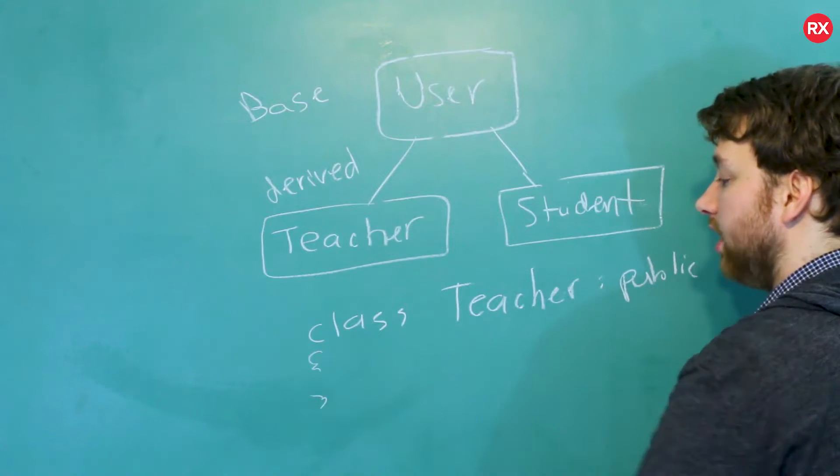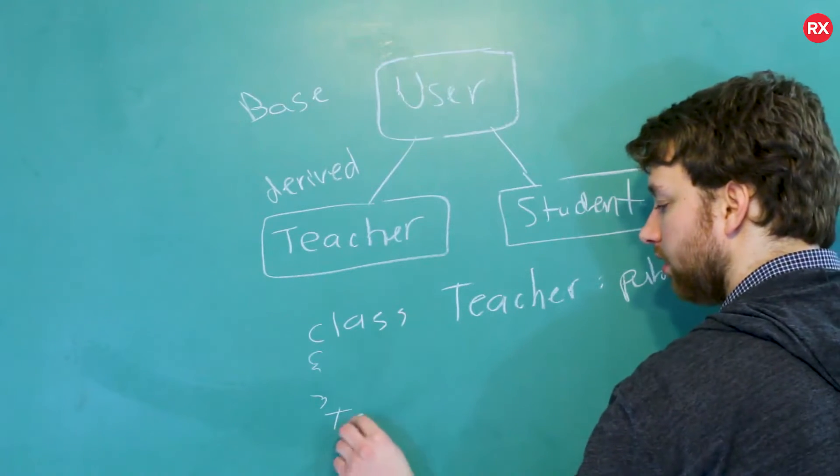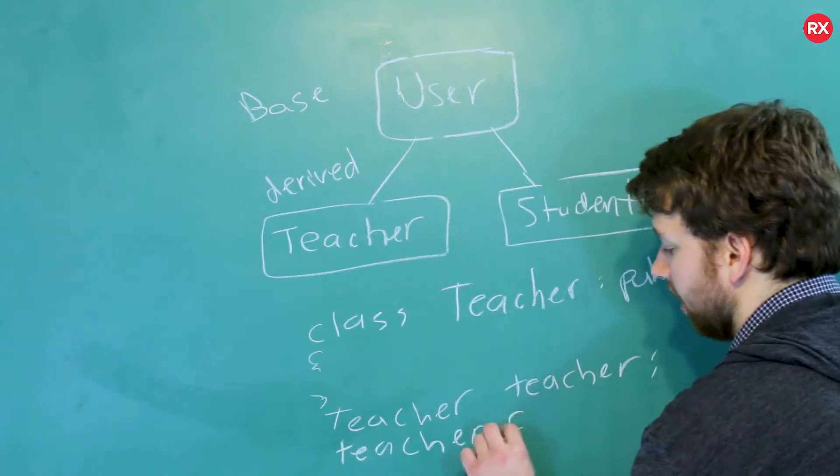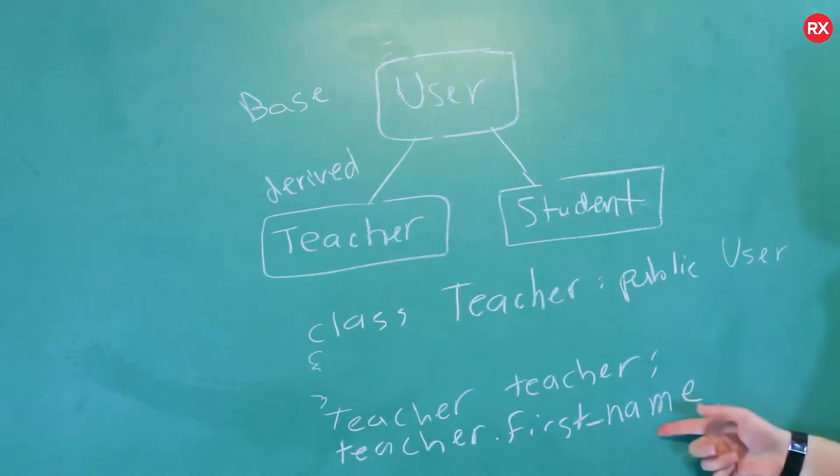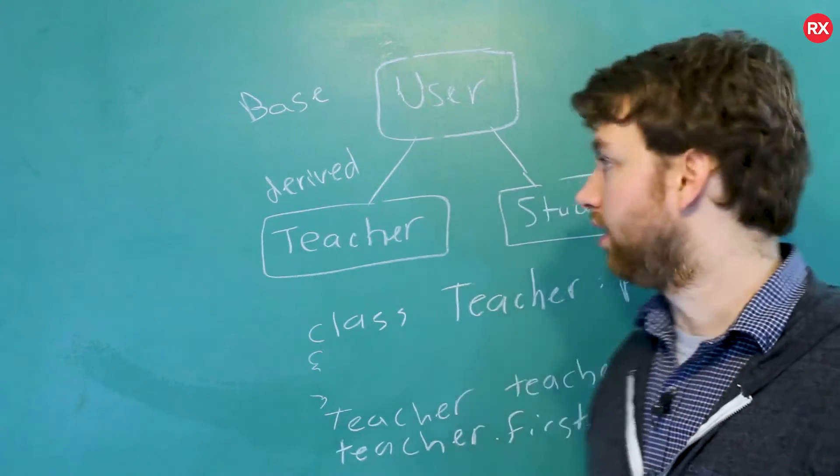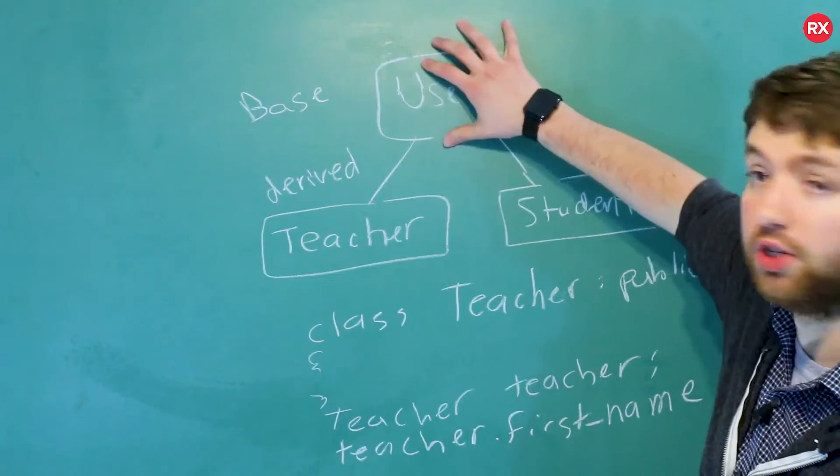So even if this class is empty, we can still create a teacher and call things on this teacher. So we could say teacher dot first name. That's because this first name is probably defined in this user class. You can do the same thing for student, get the first name from the user.